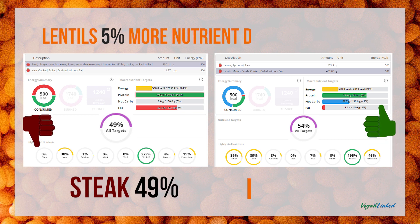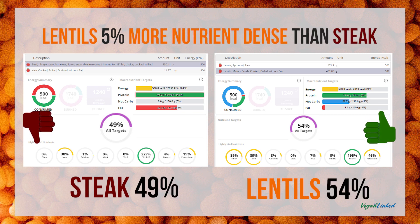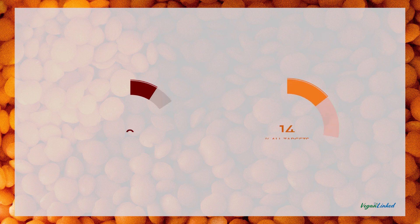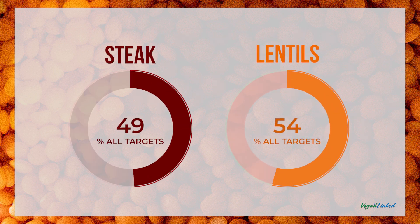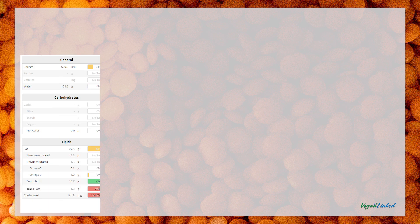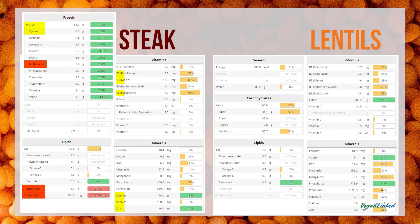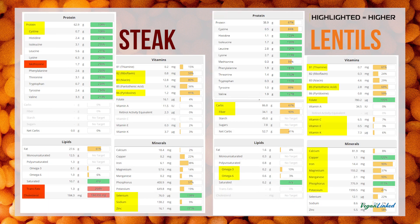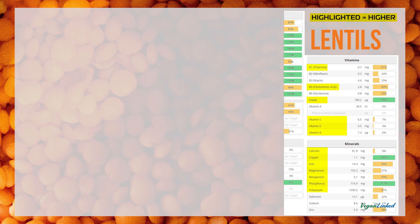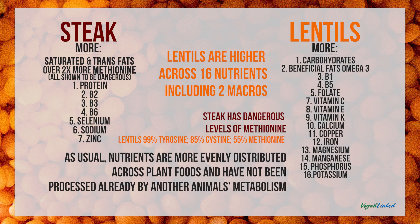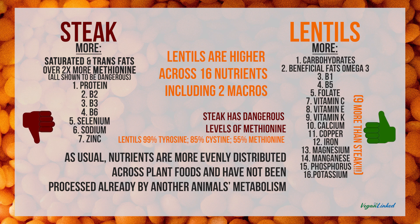Lentils are 5 percent more nutrient-dense than steak. Steak again met 49 percent of nutrient targets, but lentils had 54 percent of nutrient targets met. In steak's protein section on the top left, you can see excessive amounts of methionine highlighted in red, and in the bottom lipid section the dangerous levels of trans fats found in steak. Lentils were higher across 16 nutrients including two macros, and the third was only higher in steak due to methionine, with an insignificant difference between two other amino acids.